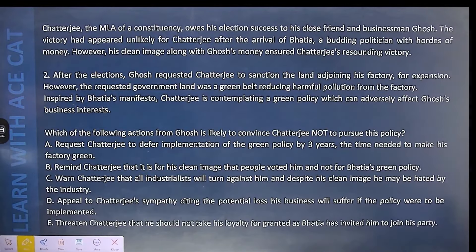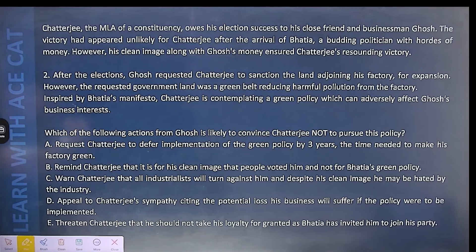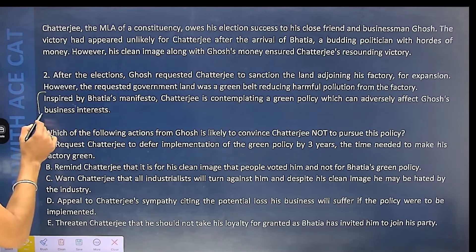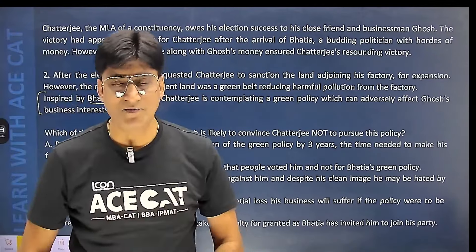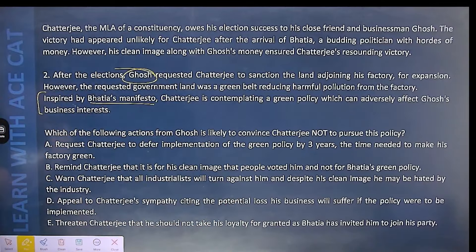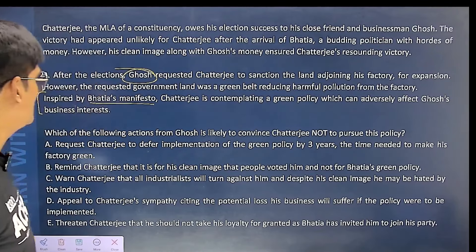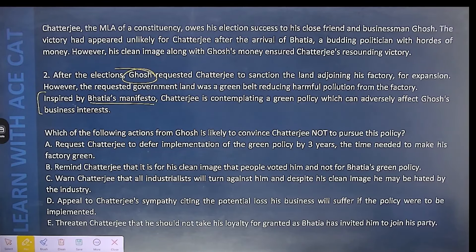Coming on the next question based on the same paragraph: Inspired by Bhatia's manifesto, Chatterji is contemplating a green policy which can adversely affect Ghosh's business interests. Which of the following actions from Ghosh is likely to convince Chatterji not to pursue this policy? Option A: Request Chatterji to defer implementation of the green policy by three years — the time needed to make his factory green.